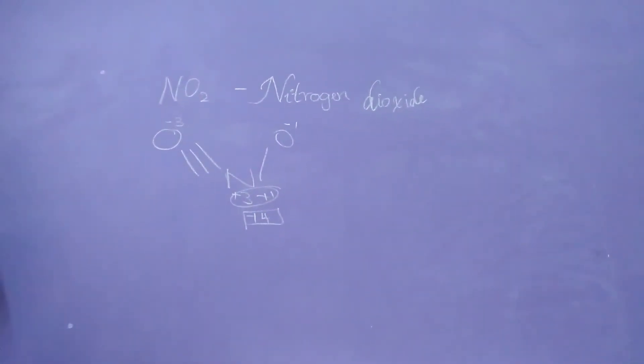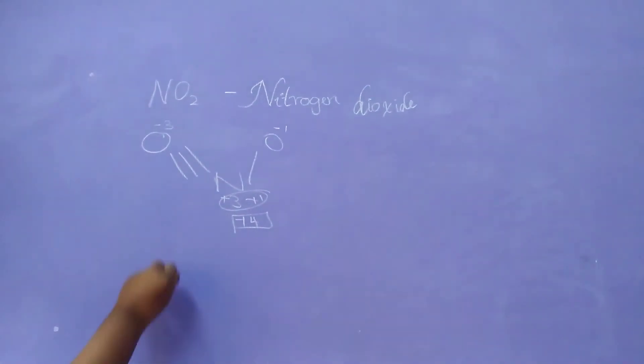In the calculation method we got plus 4, and in the structure method we also got plus 4. Therefore, the nitrogen oxidation number in NO2 is plus 4.